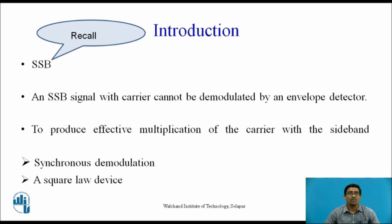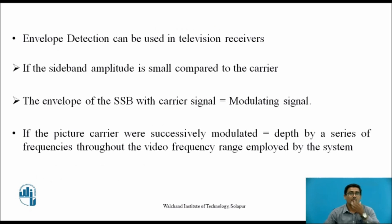There are two types of demodulation for transmission: synchronous demodulation and a square law device. Envelope detection can be used in television receivers if the sideband amplitude is small compared to the carrier — then the envelope of the SSB with carrier signal equals the modulating signal. If the picture carrier were successfully modulated to equal depth by a series of frequencies throughout the video frequency range employed by the system.